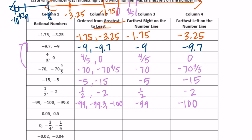5 hundredths and 5 tenths. These are positive, so the greater one is 5 tenths, and then smaller is 5 hundredths. Furthest to the right is 5 tenths. Furthest to the left is 5 hundredths.